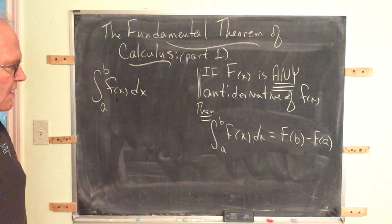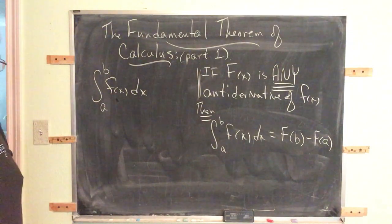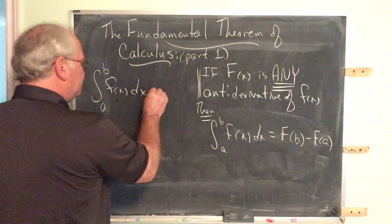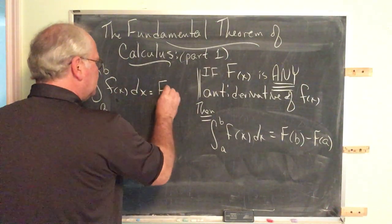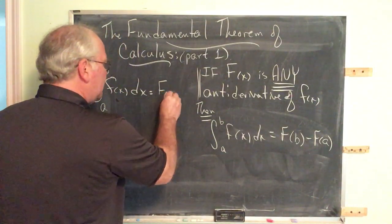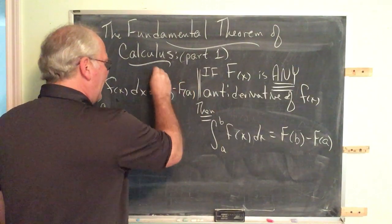That's the Fundamental Theorem. It says that's how you compute a definite integral. So the definite integral from A to B of little f of x dx is cap F of x, cap F evaluated at b, minus cap F evaluated at a.